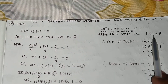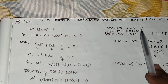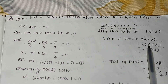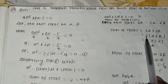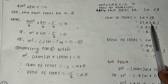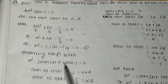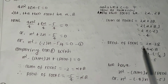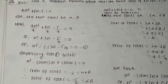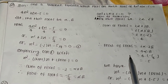The sum of the new roots is 2alpha + 2beta. Taking 2 common gives 2(alpha + beta). We found alpha + beta = -2, so the sum of the new roots is 2 × (-2) = -4.